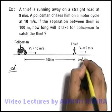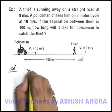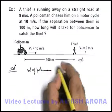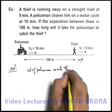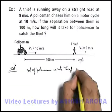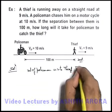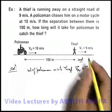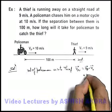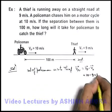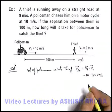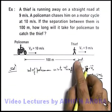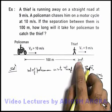If we consider the thief to be at rest, we find the velocity of the policeman with respect to the thief. This can be written as v_p minus v_t. As it is just one dimension, we can simply write 10 minus 9, which is 1 meter per second. So the policeman is moving at a speed of 1 meter per second with respect to the thief, if the thief is considered to be at rest.